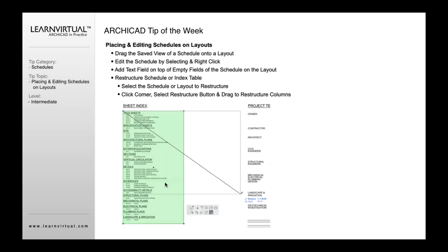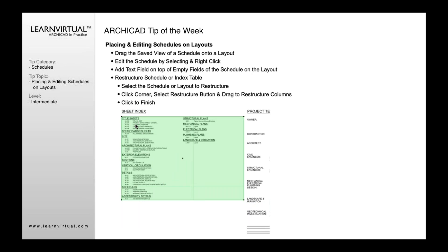What you'll do is click on a corner of that sheet index — ideally this corner right here. Then in your pet palette, select the option at the bottom right corner of the pet palette. That particular option is called the Restructure command, and that restructure command will restructure the table so that it's not just one column anymore — it's now two columns.